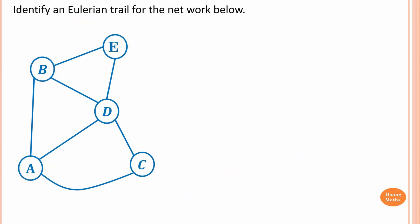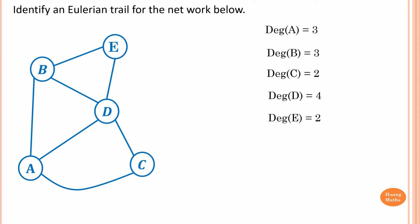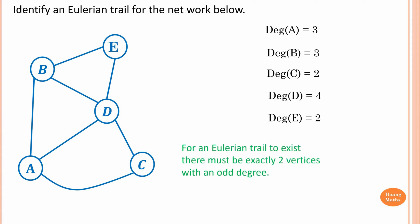So let's identify an Eulerian trail for this network. First, we need to work out whether an Eulerian trail exists. Step 1: find the degree of each vertex. Vertex A has degree 3, vertex B has degree 3, vertex C has degree 2, and vertex E has degree 2. For an Eulerian trail to exist, we must have exactly 2 vertices with an odd degree. We have vertex A and vertex B, both degree 3, which is odd. The rest are even. So we can identify an Eulerian trail for this network.